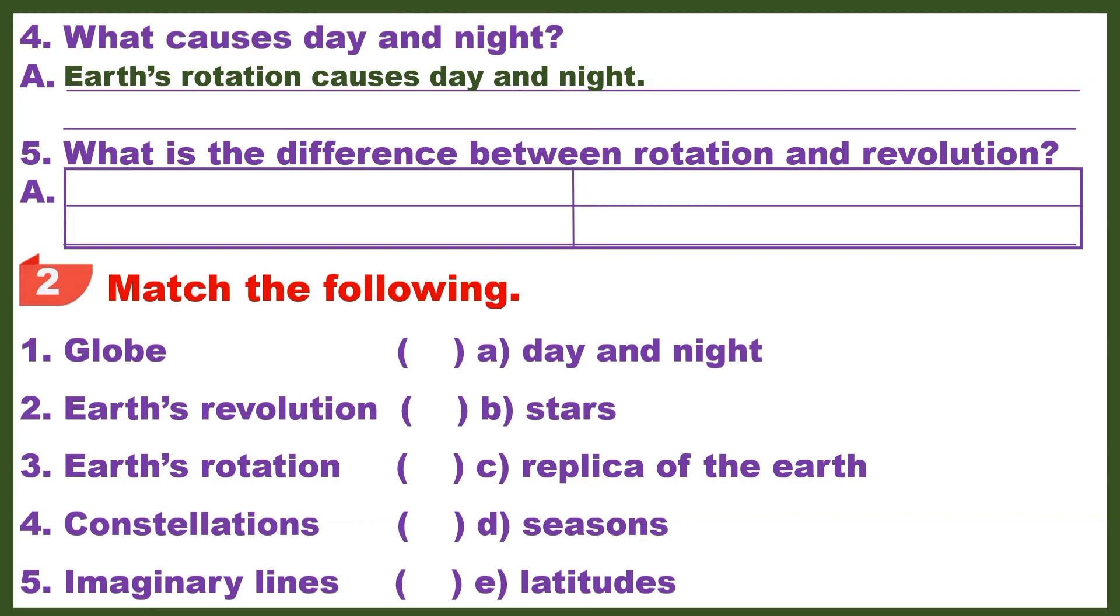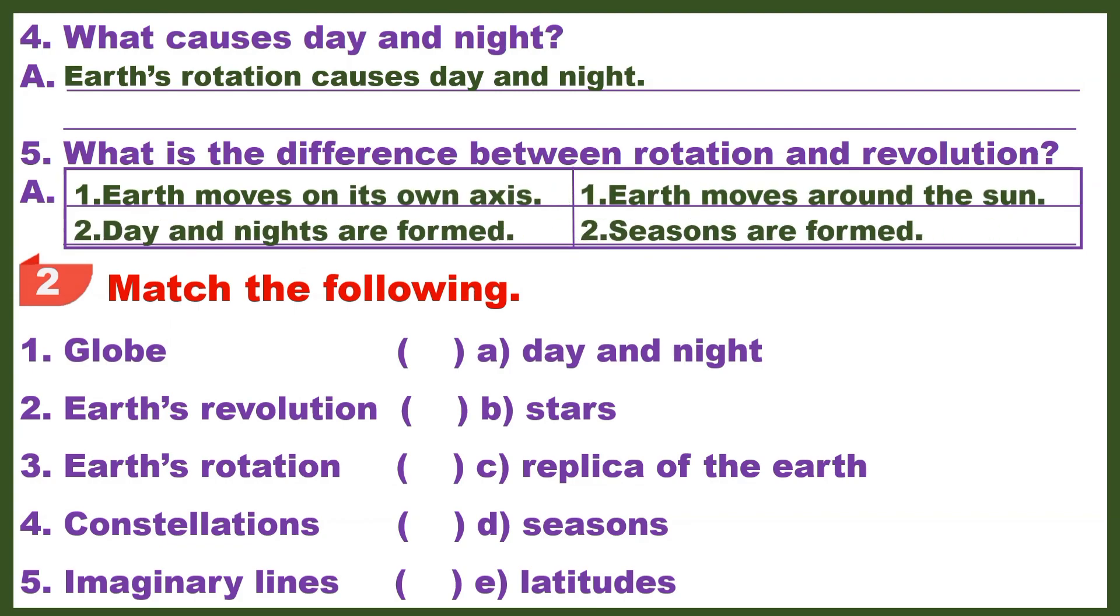Question 5: What is the difference between rotation and revolution? Answer: In rotation, Earth moves on its own axis. In revolution, Earth moves around the sun. Day and nights are formed due to Earth's rotation. Seasons are formed due to Earth's revolution.